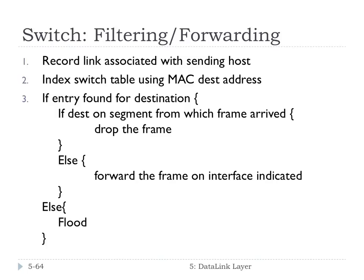This is sort of a pseudocode description of how this switch filtering and forwarding happens. We're going to record the link associated with the sending host. In our case, we remember A was on 1. We will look in the switch table for the MAC address. If the destination is on the segment from which the frame arrived, we drop the frame. So it may be that there are actually two computers on that same link that are talking to each other, and that switch doesn't need to be involved. If the destination is in the table on a different interface, then we forward the frame to that interface. If it's not in the table at all, then we will flood it or broadcast it. And that means we're going to forward it on all interfaces except the one that it arrived on.